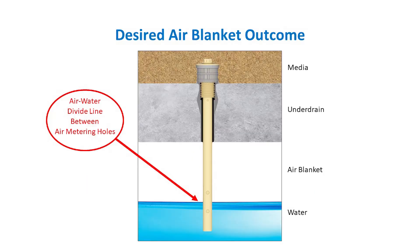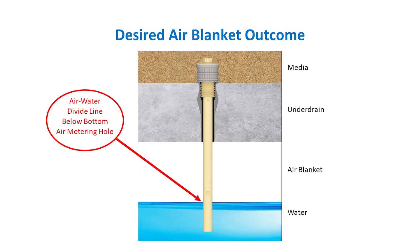Effective design locates the air water divide line between air metering holes or an air metering hole in the nozzle tailpipe bottom. Slots are not typically used.